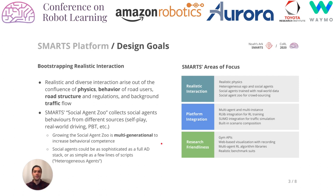Realistic and diverse interaction really arises out of a confluence of realistic physics, behaviour of road users, road structure and regulation, and background traffic flow. SMARTS' take on this is the social agent zoo, which collects diverse social agents from different sources, such as self-play, real-world driving, or contributions from the community. These agents can be trained in a multi-generational way, starting with mostly rule-based agents, then bringing in learning-based agents and increasing complexity generation after generation. These agents can then be used for training or for evaluation.